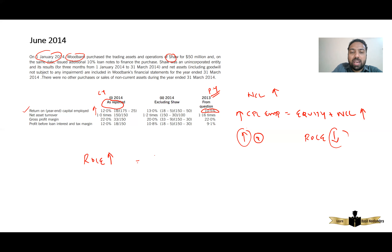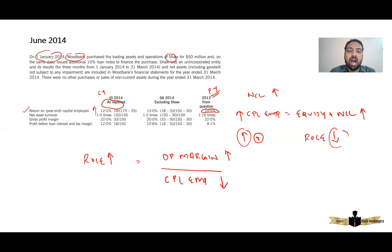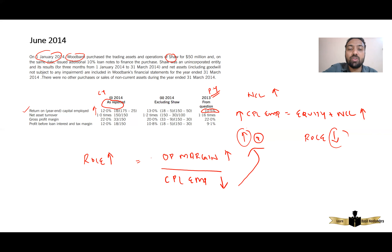If the ratio increases, that means either the numerator has increased — because numerator and ratio are directly related — or capital employed has decreased. But we have already proved that capital employed has not decreased; it has increased. So the major reason for this ROCE increase is not capital employed. Since capital employed has increased, the major reason why the 2014 figures are high is that the operating margin has increased.